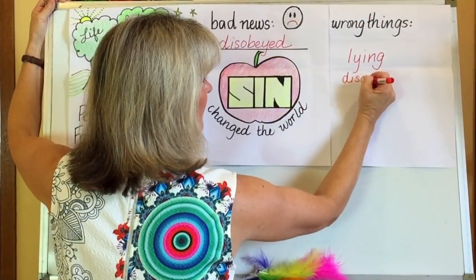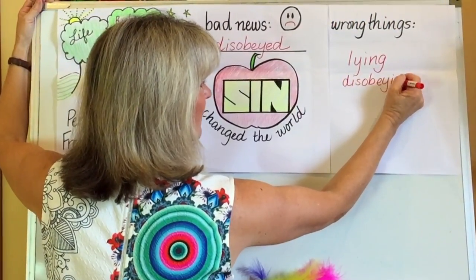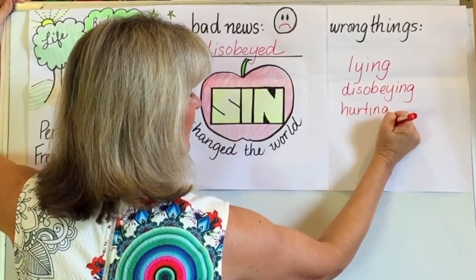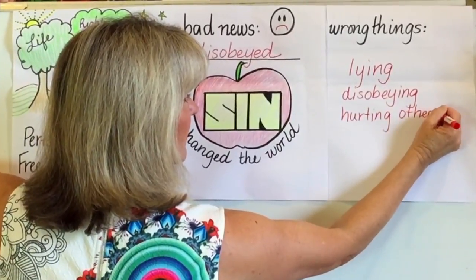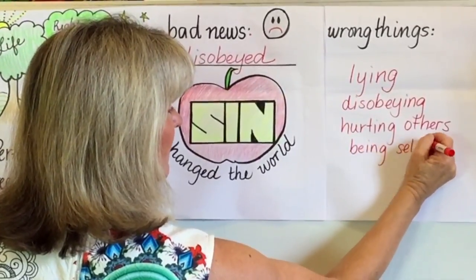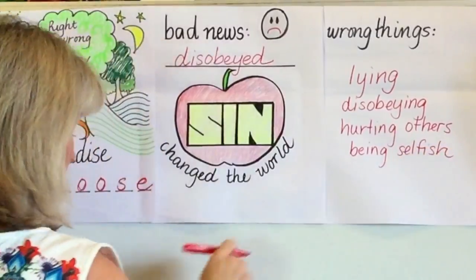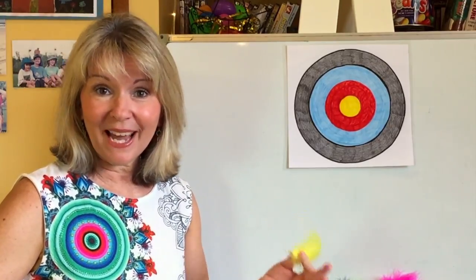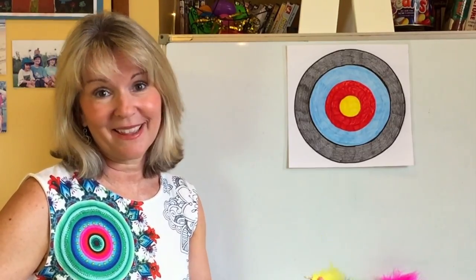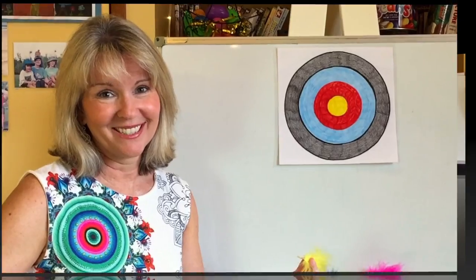Everyone does wrong things like lying, disobeying, hurting others, and being selfish. And then I refer back to the Bible story and we talk about that some more.